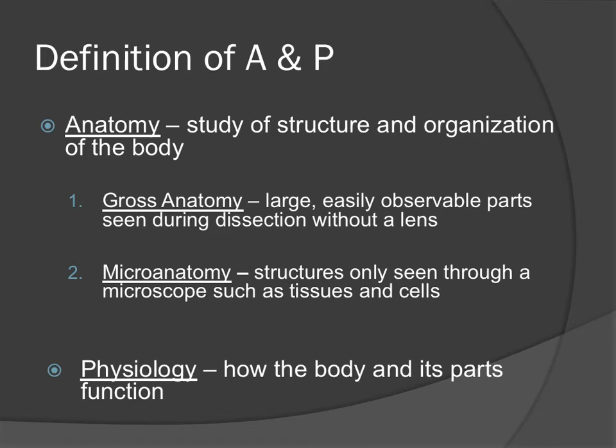Gross anatomy includes parts you can see without a microscope, like the liver and the gallbladder. Micro anatomy requires a microscope to see, such as your tissues and cells — for example, your blood cells, connective tissues, or epithelial tissues.